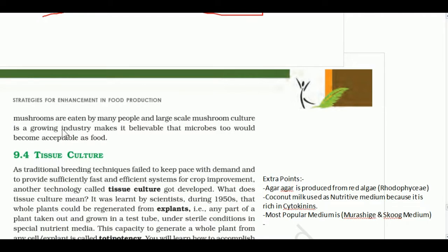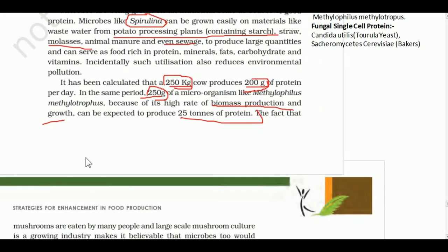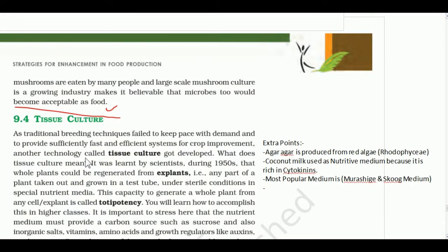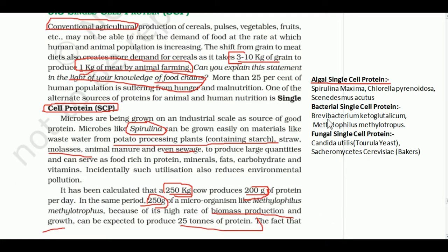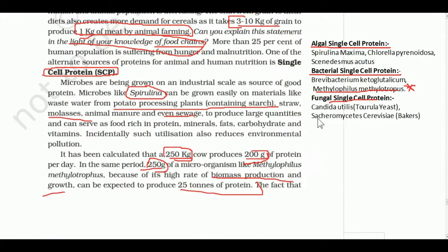Mushroom culture is a growing industry making it believable that microbes can become acceptable as food. Important organisms for single cell protein: Algae — Spirulina maxima, Chlorella pyrenoidosa, Scenedesmus aquaticus. Bacteria — Brevibacterium ketoglutarelicum, Methylophilus methylotrophus. Fungi — Candida species can also be used.